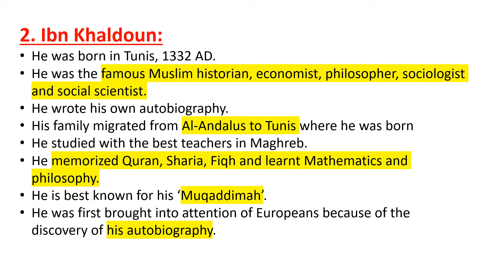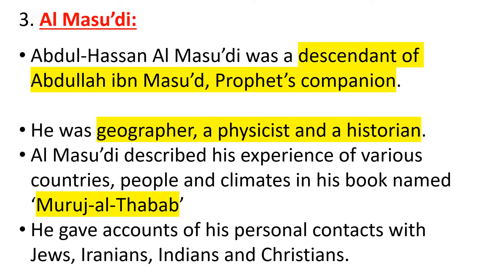The third one is Al-Masaudi. Abdul Hassan al-Masaudi was a descendant of Abdullah ibn Masud, the Prophet's companion. He was very famous as a devout Muslim person and as a descendant of such a great companion of the Prophet. He was a geographer, physicist, and historian.